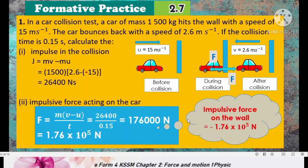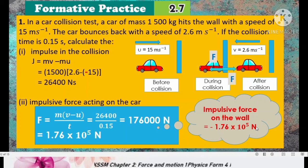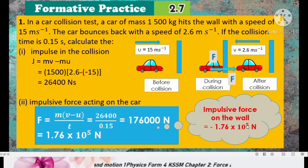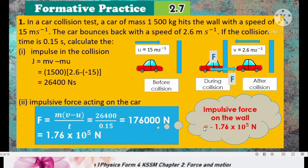The impulsive force on the wall equals negative 1.76 × 10⁵ newton — the same magnitude but in the opposite direction.